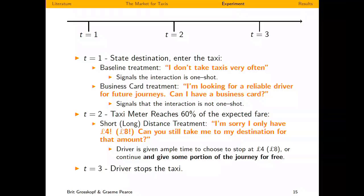Whenever the driver stops the taxi, our tester gets out. This might be at the final destination, or it might be at the very first moment they mention not having enough money. We are interested in where the driver stops, in relation to how much the passenger can afford. When we look at other-regarding behavior, we ask how much longer a person is taken depending on how much they can afford — that's what we call 'giving.'